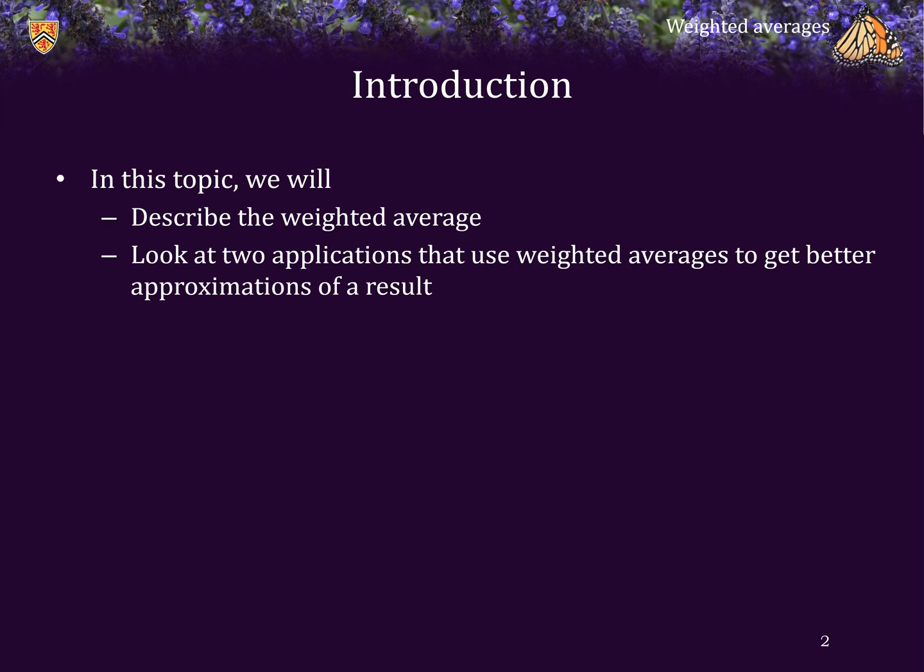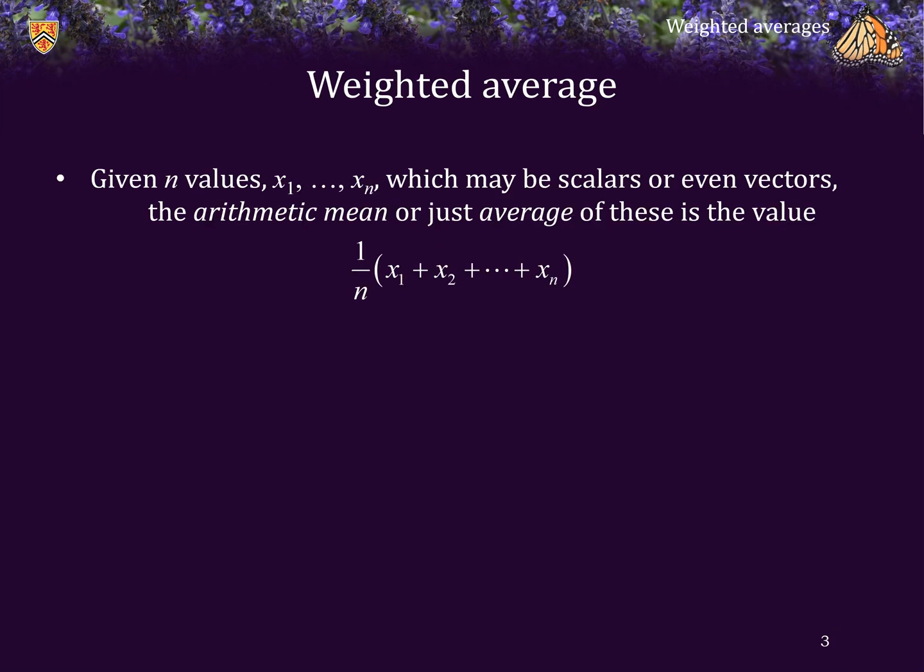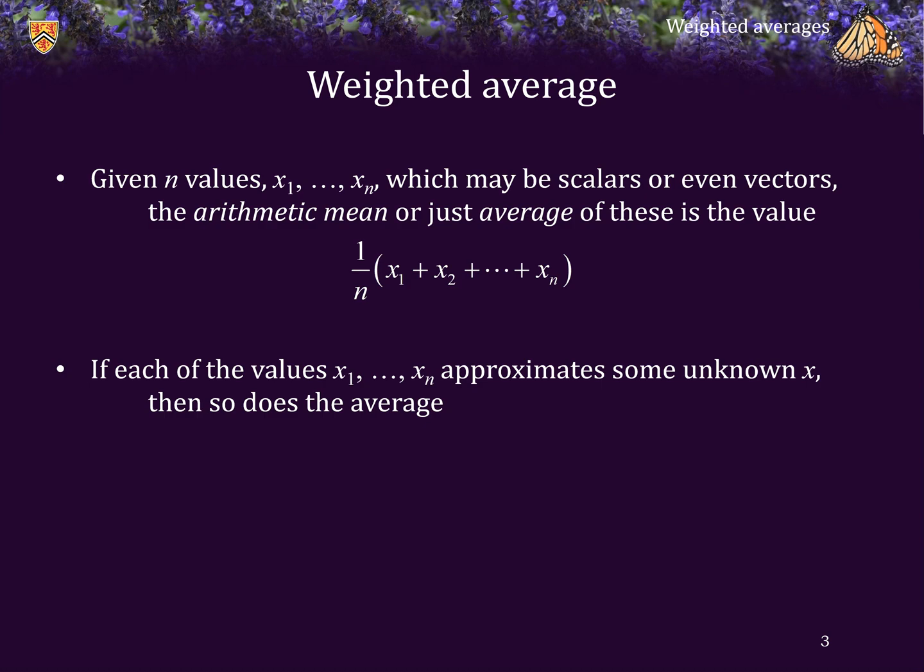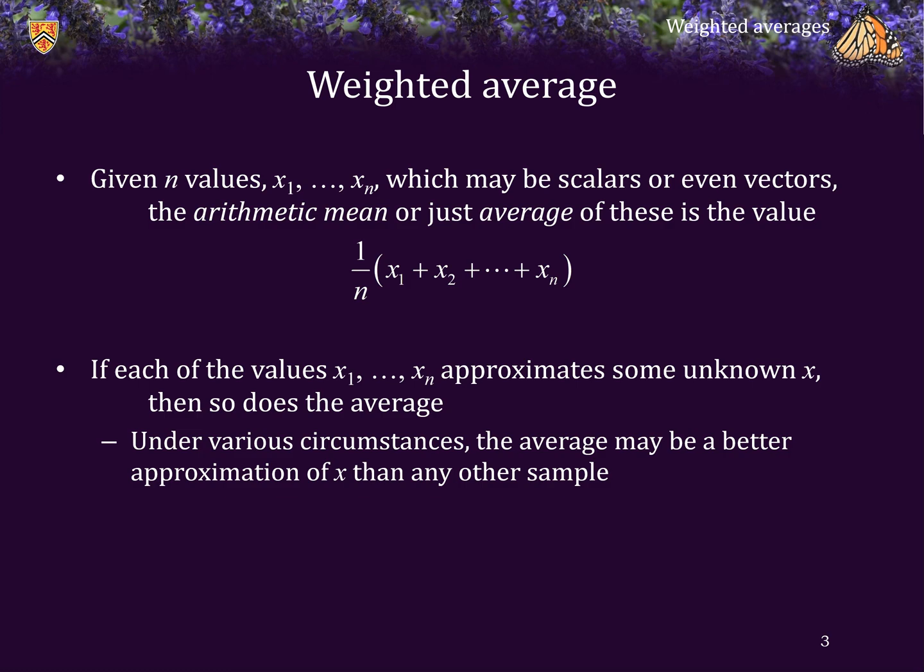To begin, given n values X1 through Xn, which may be scalars or even vectors, the arithmetic mean, or just what's normally called the average of these values, is simply the sum of the values divided by n. If each of these values approximates some unknown value X, then so does the average.